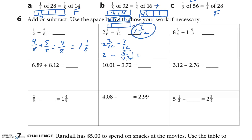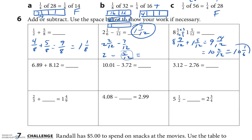Eight and three fourths plus one and five twelfths: I'm going to change the fourths to twelfths. Three times three is nine, so that's eight and nine twelfths. Plus one and five twelfths: nine plus five is fourteen twelfths, so nine and fourteen twelfths, which becomes ten and two twelfths, which can also become ten and one sixth. I would take either — ten and one sixth is the most simplified.